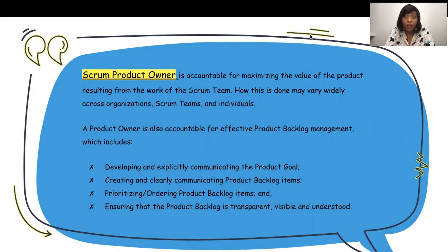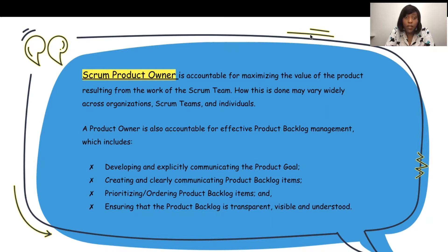A product owner is also accountable for effective product backlog management. They are the ones who are prioritizing, identifying, and laying out the strategy from the development standpoint — identifying the order in which technology is built and ensuring that order is reflective of the product roadmap and what business stakeholders are looking for within a year or potentially a multi-year strategy. This also includes developing and explicitly communicating the product goals, as well as creating and clearly communicating product backlog items so the team understands the user stories and what functionality should be included.